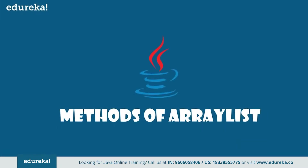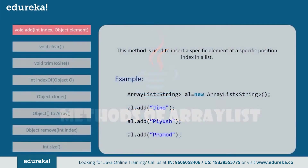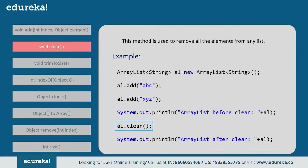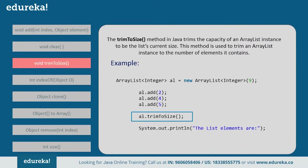Now let's dive into the various methods supported by ArrayList. First, the add() method — this method is used to add elements to the ArrayList; that is, it inserts a specific element at a specific position index in the list. You can create an ArrayList and go on adding elements using the add method. Next, the clear() method — this method is used to remove all elements from the list; you can just use the clear method to remove all elements present in the list.